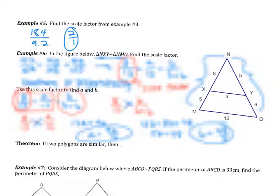The key idea in this example is using the scale factor to find missing sides. Always start with the statement of proportionality — identify which sides correspond — then use the scale factor and proportions to find the other sides.